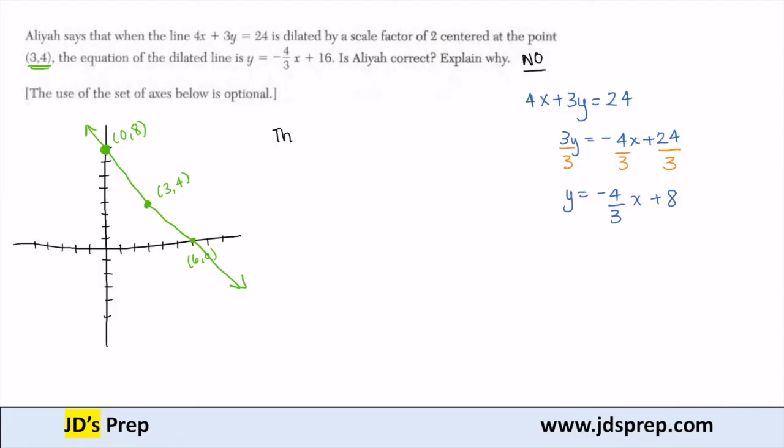So the center of dilation, the point (3, 4), is on the line. Since that happens, the equation remains the same.